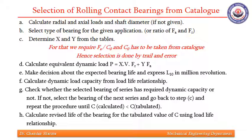First, we need to find what are radial and axial loads, if they are not given. Then depending on the ratio FA by FR, we need to select which bearing is to be used — like ball bearing, roller bearing, angular contact bearing, or self-aligning bearing. Then we will find X and Y from the tables.